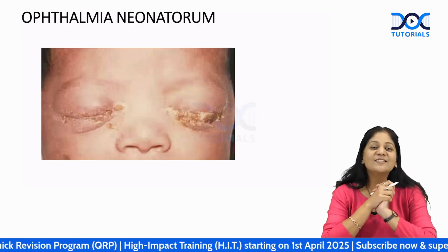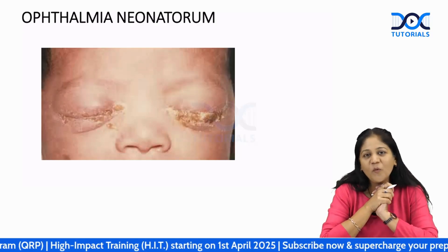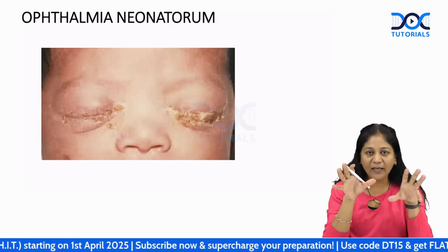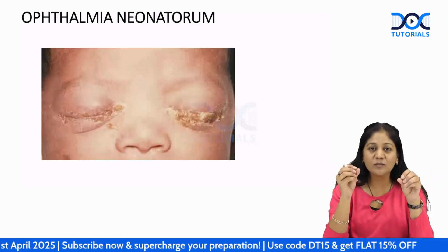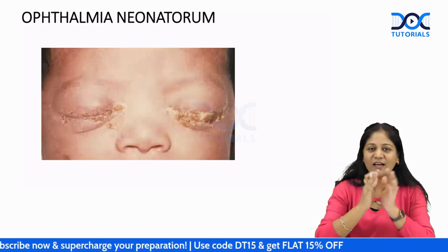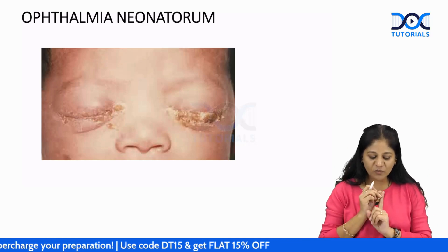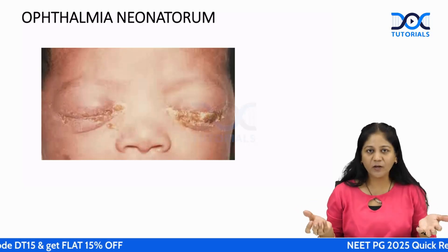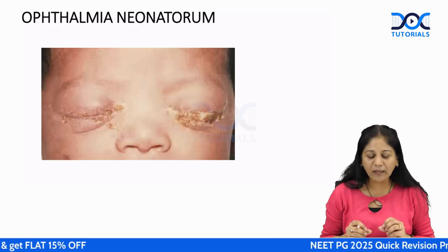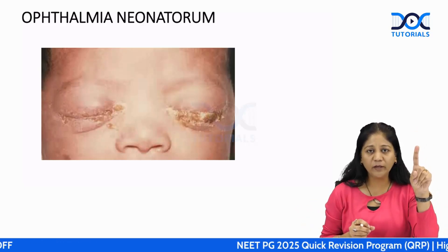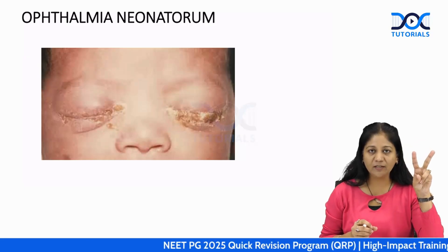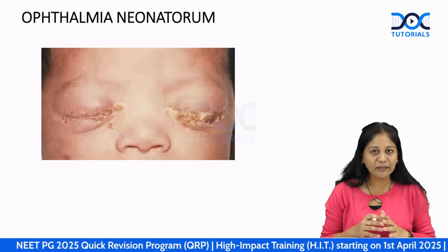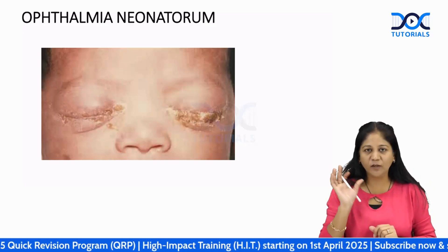Now let's talk about the newborn baby. Small babies cry a lot but don't produce tears because the lacrimal gland is not fully functional. So watering from a newborn baby's eye is abnormal. It could be ophthalmia neonatorum, congenital glaucoma, or congenital dacryocystitis. Today we're learning about ophthalmia neonatorum.